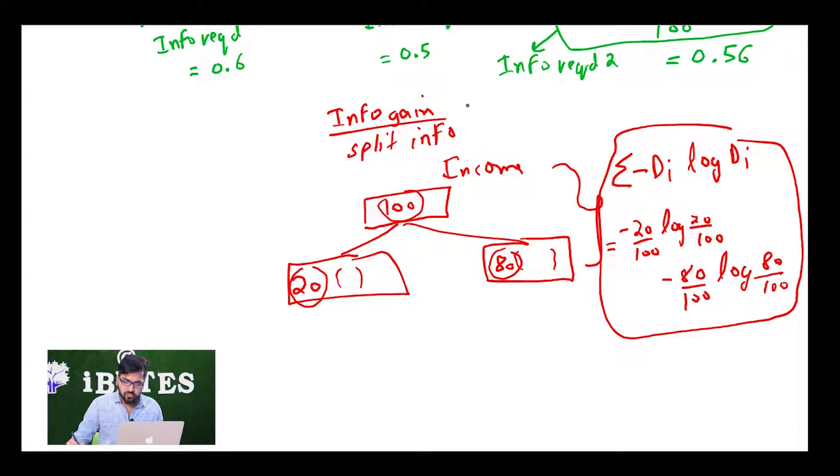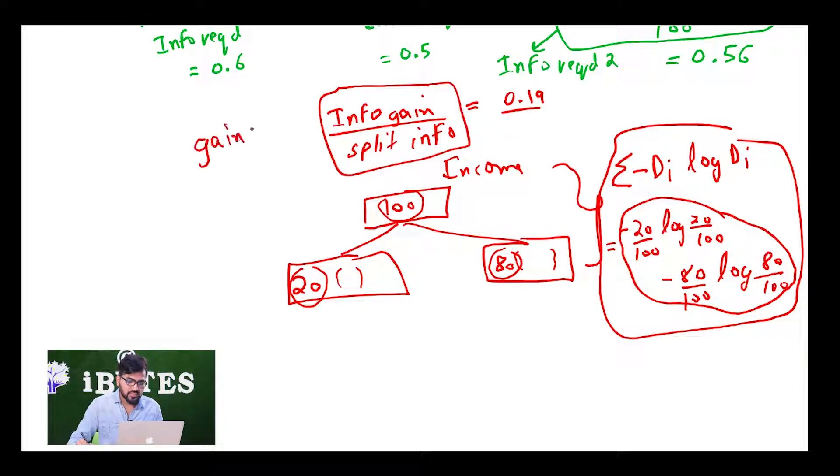What I am going to do is take the information gain in this case, which was 0.19, and divide this by the split info value. Similar thing I am going to do for my criminal record and for my loan demand, and only then I will be able to compare them. So there is not much difference between information gain and gain ratio. The only difference is in the case of gain ratio we also have to divide it by split info, and this thing is known as gain ratio.